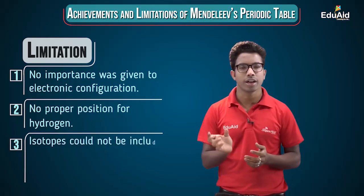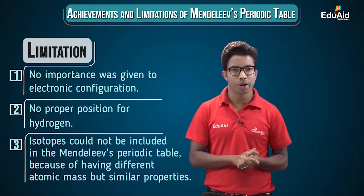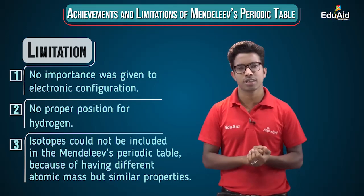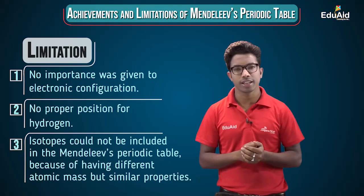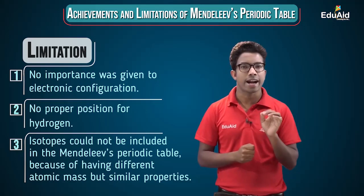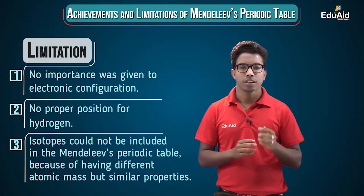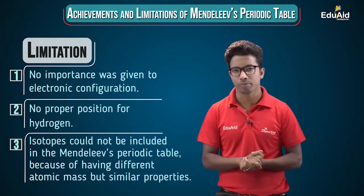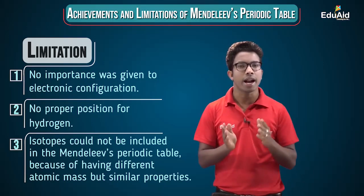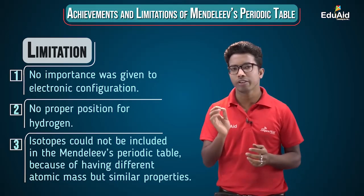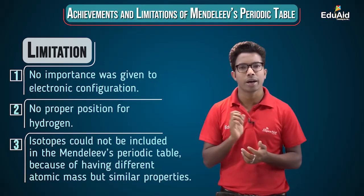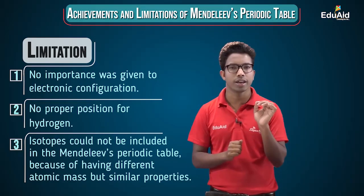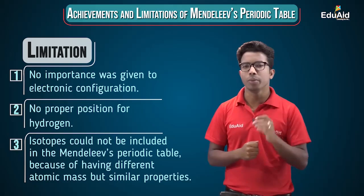These isotopes could not be included in Mendeleev's periodic table. When isotopes were discovered after Mendeleev's table, they could not be placed in it because Mendeleev's law stated that the properties of an element are a periodic function of its atomic mass — meaning elements with different atomic masses should be placed at different positions. But isotopes, despite having different atomic masses, have the same properties and should occupy the same position. This contradiction is one of the limitations.